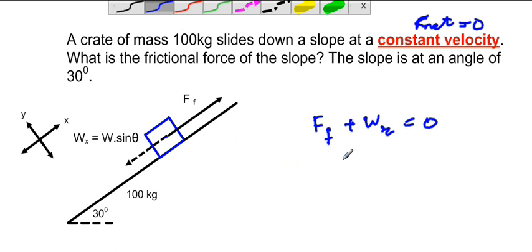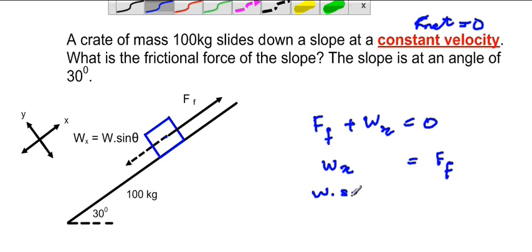F_friction minus w_x equals zero, which implies that w_x equals F_friction. Looking at the x-component of weight, we know that it will always be w sine theta, and it will be equal to the frictional force.